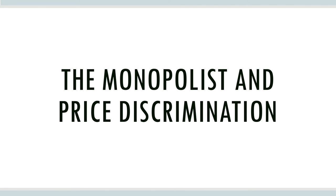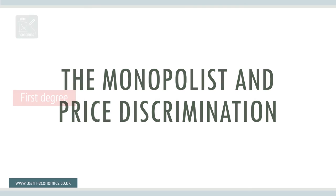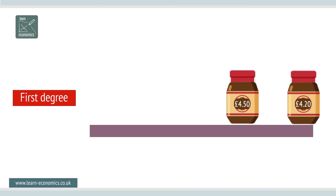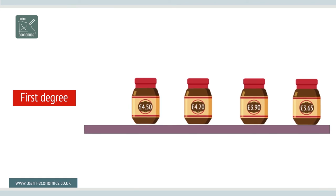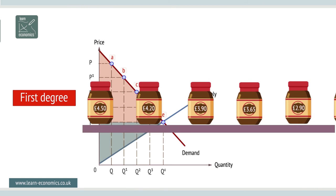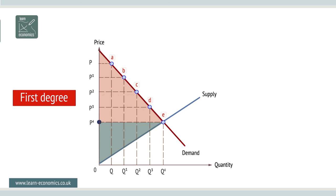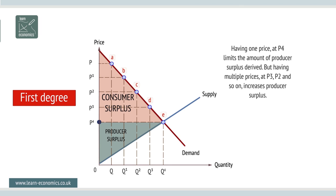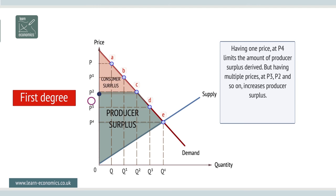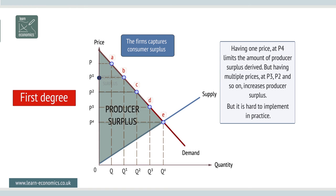Price discrimination is a strategy which attempts to increase profits by charging different prices for the same product. First degree discrimination means charging a different price for every good sold. At price P4, consumer surplus is the whole area under the price line. If the firm discriminates with two new prices, P3 and P2, the firm gains consumer surplus which it converts into producer surplus. In this way, producer surplus can be increased as more prices are added, but it is very difficult to apply in practice.